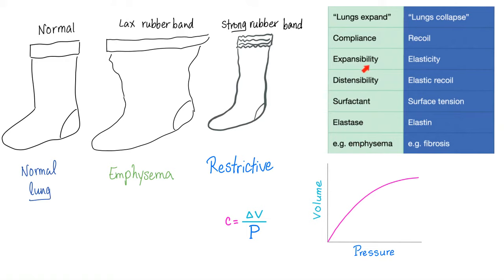Lung expansion, compliance, expansibility, and distensibility are synonyms. Surfactant and elastase help compliance. Emphysema has increased compliance. Lung collapse, recoil, and elasticity are synonyms — driven by surface tension, elastin, and fibrosis. Lung fibrosis (restrictive) decreases compliance; emphysema (obstructive) increases compliance. A normal lung is like a normal sock; emphysema is like a sock with a lax rubber band — easy to expand but won't recoil on its own. Restrictive/fibrosis is like a sock with a very strong rubber band — impossible to expand, but recoils strongly when left alone.